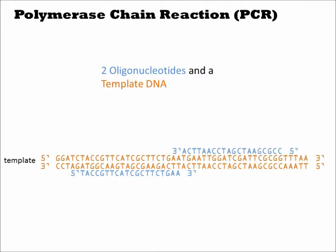The oligos are designed such that they anneal to the 3' end of the region to be copied. The polymerase will add base pairs to the 3' end of the oligo and fill in new nucleotides in the region we want to amplify.